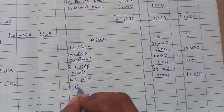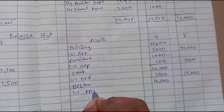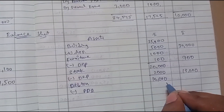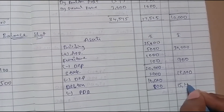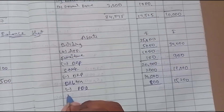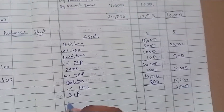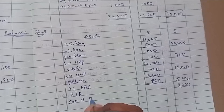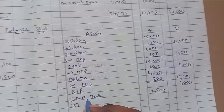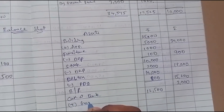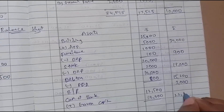Debtors: balance sheet value is 16,000, minus provision for doubtful debts at 5% which is 800, equals 15,200. Bills receivable: 3,000. Cash at bank: existing 12,500 plus new partner Ganeshan's capital of 10,000 equals 22,500.